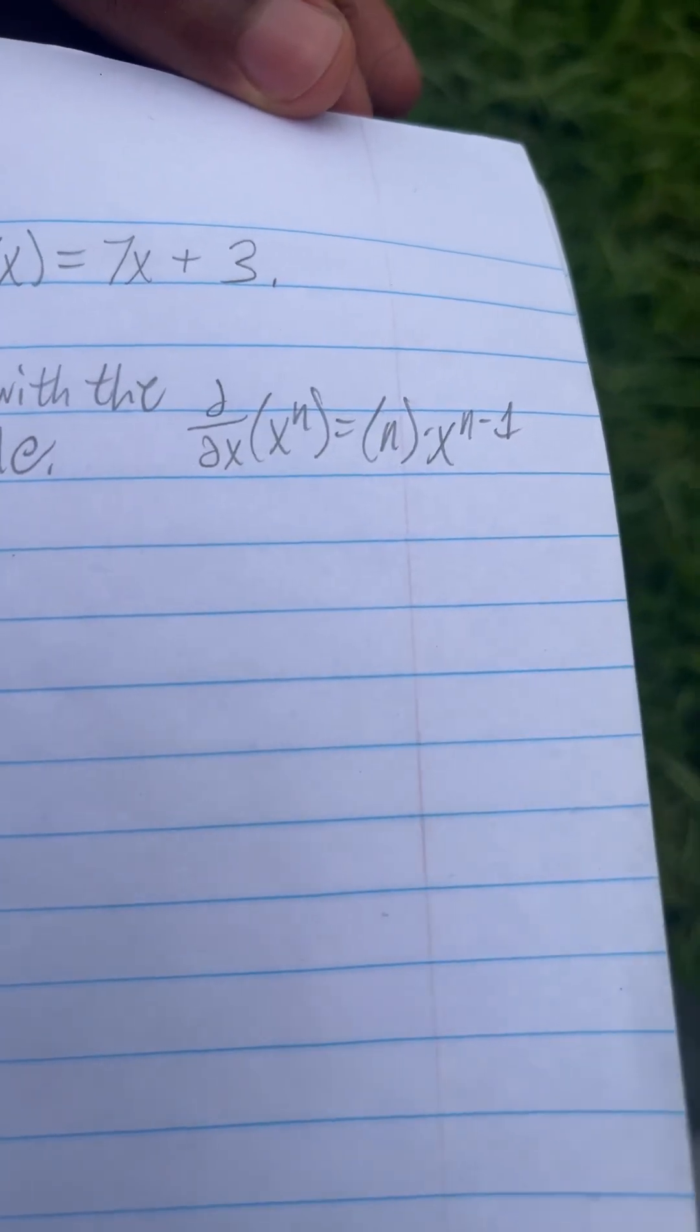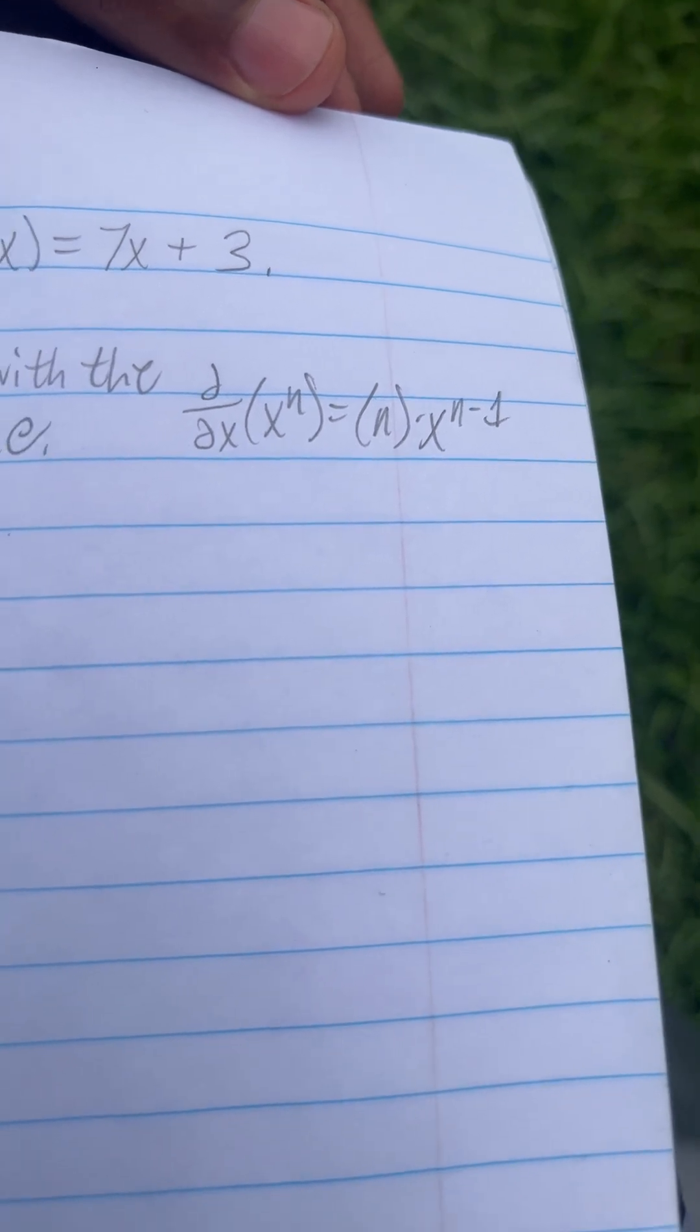Step 1 is to find derivative f(x) using the derivative power rule. So it's d/dx x to the power n equals n times x to the power n minus 1.